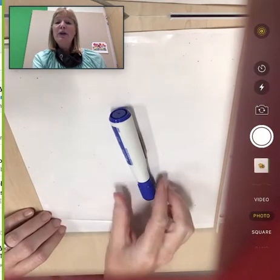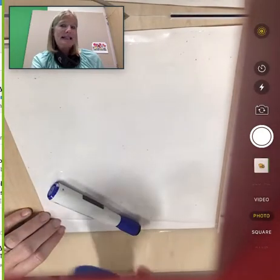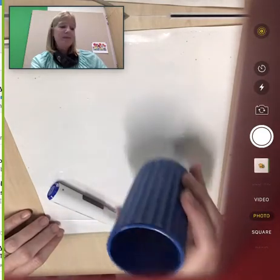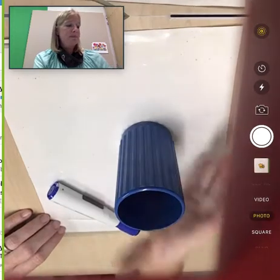All right, we are ready for our Turnaround Rule. I had so much fun with the Yahtzee dice that I'm going to use them again. I have my little bucket here and I have two dice in here. I'm going to roll them and let's see what we get.